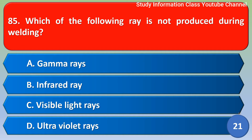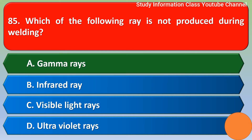Next question: Which of the following rays is not produced during welding? Option A gamma rays, option B infrared rays, option C visible light rays, option D ultraviolet rays. The correct answer is option A, gamma rays.